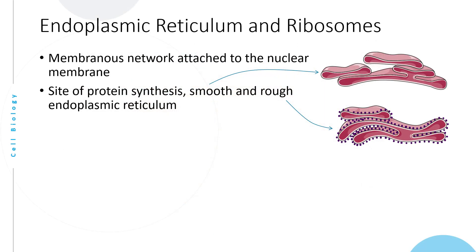The first one in the list is endoplasmic reticulum and ribosomes. Endoplasmic reticulum is a membranous network attached to the nuclear membrane, found around the nucleus. It is the site of protein synthesis. There are two types: smooth and rough endoplasmic reticulum.